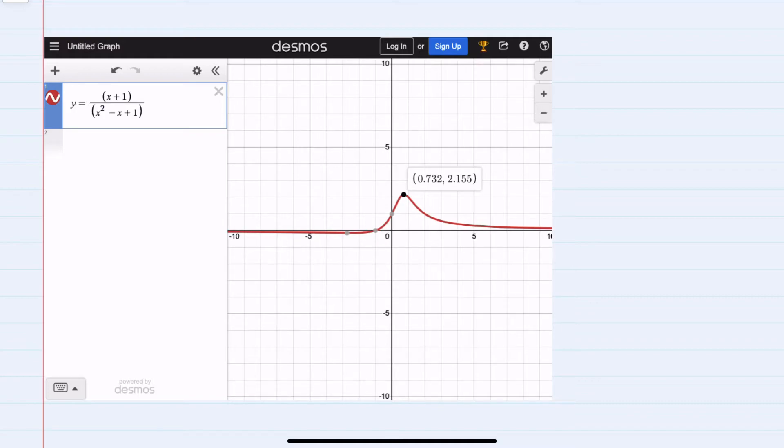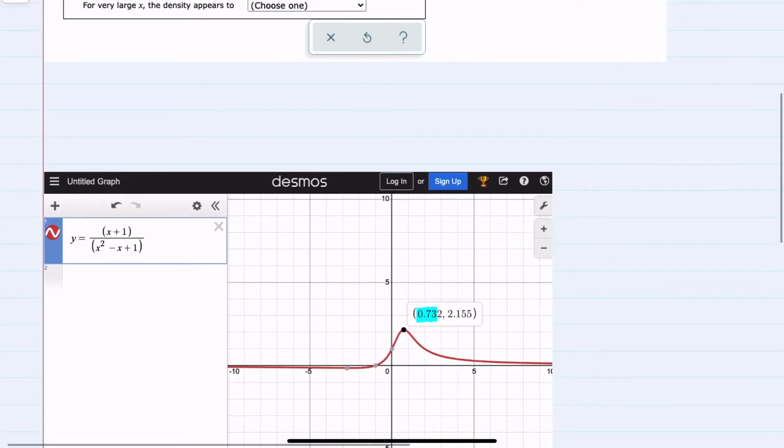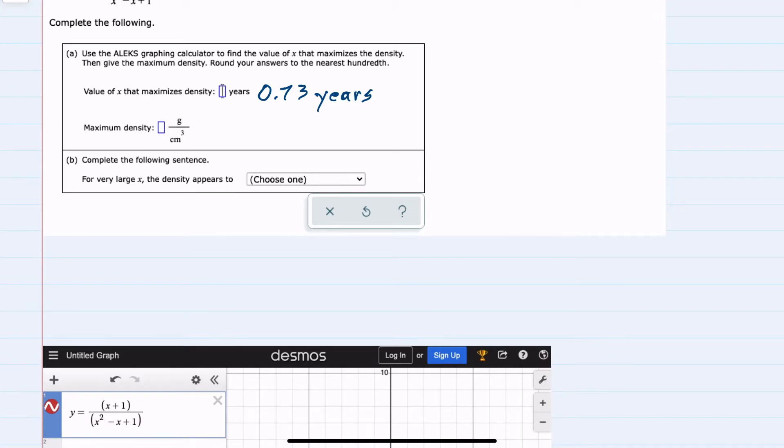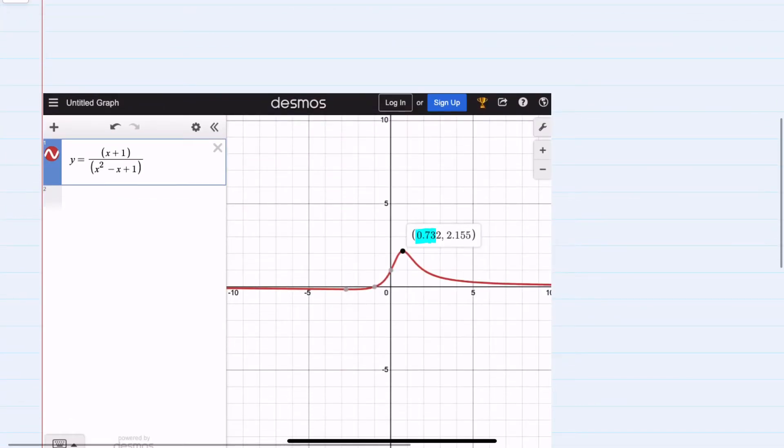Our instruction said to round each of these to the nearest hundredths, so our years would round to 0.73, rounding down due to that 2. So maximum density occurs at 0.73 years, and then that density, also rounding to the hundredths place, this time I need to round up because of the 5 after our 5, so this would be 2.16.